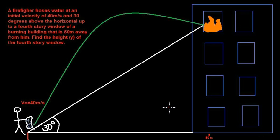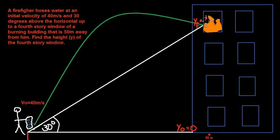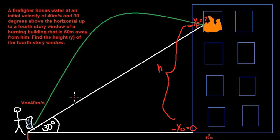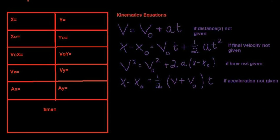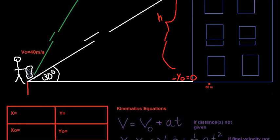We can assume that our initial height — where he starts — is at zero, and the final height is what we're trying to solve for. What I like to do with two-dimensional kinematics is just create a chart and put in all my values that I'm given, so I know what I'm missing and what I'm trying to solve for.